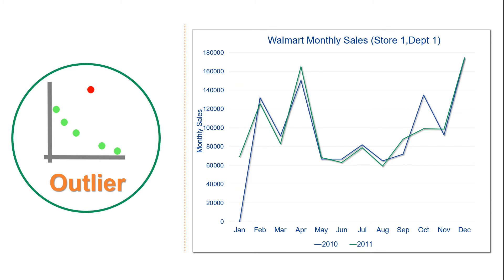Let us reconsider the Walmart charts to observe outliers. On average, the monthly sales in store 1 and department 1 of Walmart is around $90,000. But some months recorded sales that were way above the average value. For example, the month of December had sales that almost doubled the average monthly sales, standing at $170,000 plus. This can be referred to as an outlier. It is possible to have more than one outlier in your data set — the month of April is another good example of an outlier.